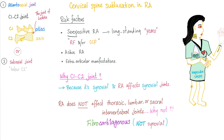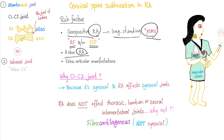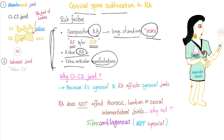Risk factors for cervical spine subluxation: seropositive rheumatoid arthritis, long-standing rheumatoid arthritis for years, especially if rheumatoid factor and CCP are positive, especially if the rheumatoid arthritis is active, and especially if you have other extra-articular manifestations — you are at high risk.